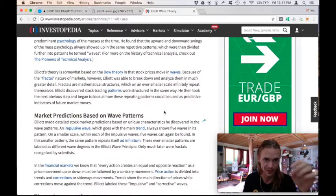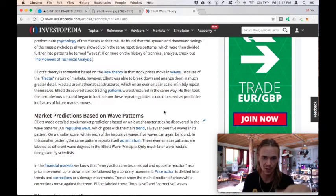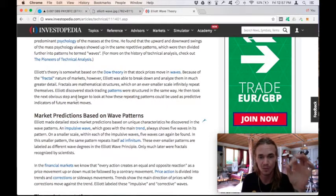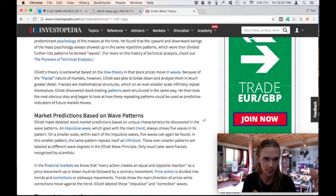Elliott's theory is somewhat based off the Dow theory in that stock prices move in consecutive waves, based off the fractals of nature. However, Elliott was able to break down and analyze the markets in much greater detail, basically that these fractal mathematics and structures, which are ever so smaller on scale, infinitely repeat over and on top of themselves.